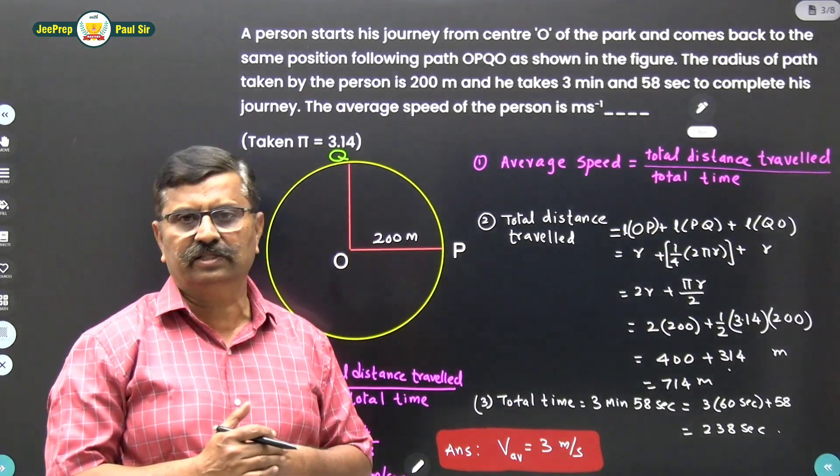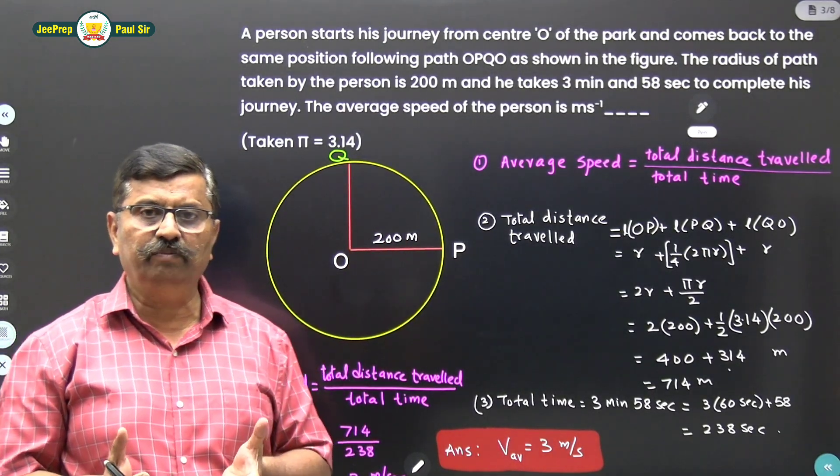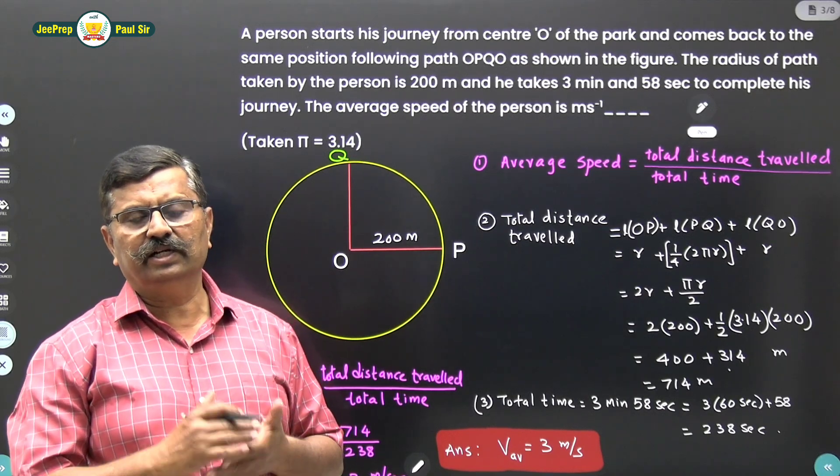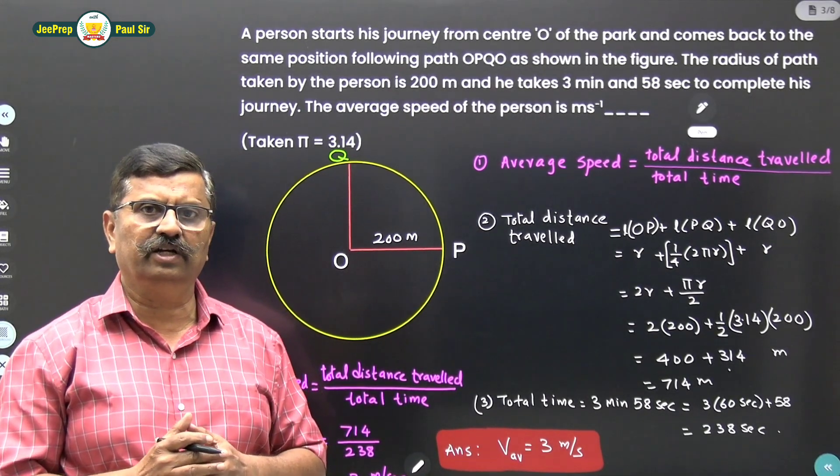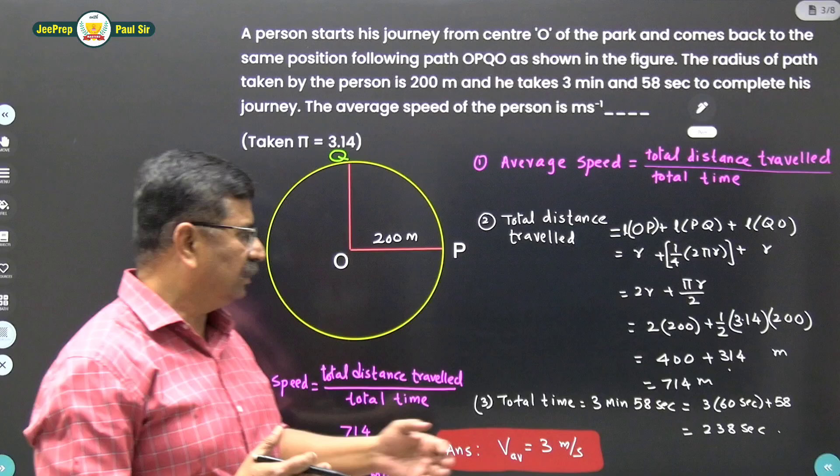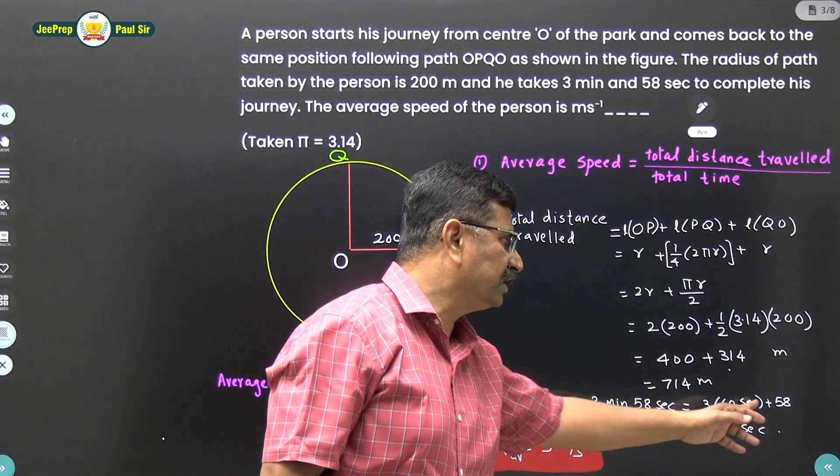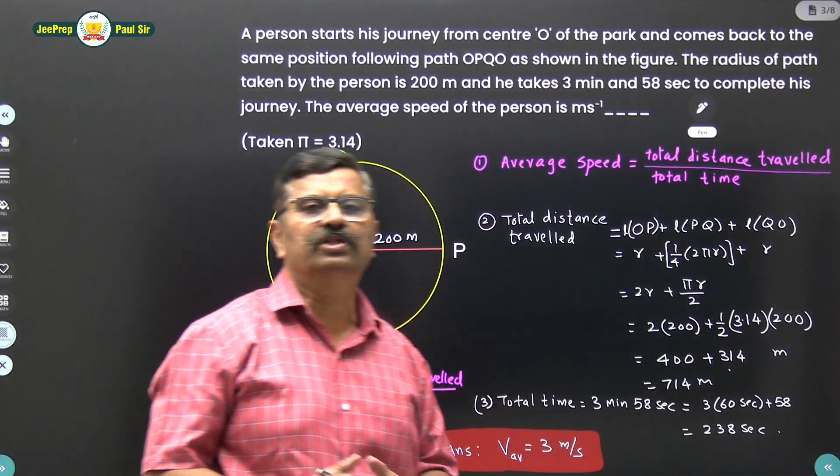Now we have got the total distance traveled. Now what is the total time taken by that person? They have given us that is 3 minutes and 58 seconds which we'll convert into seconds. So 3 into 60 seconds plus 58, this gives 238 seconds.